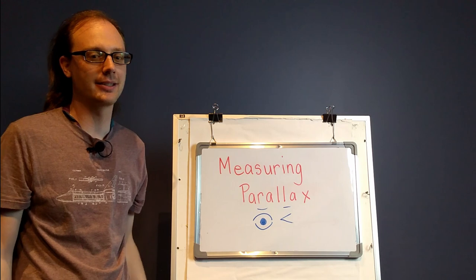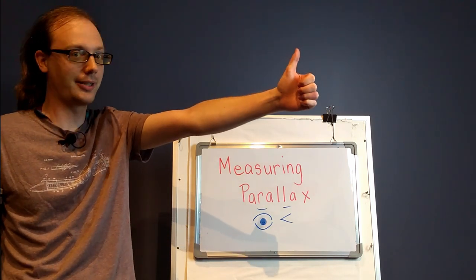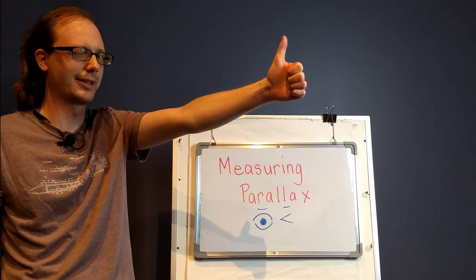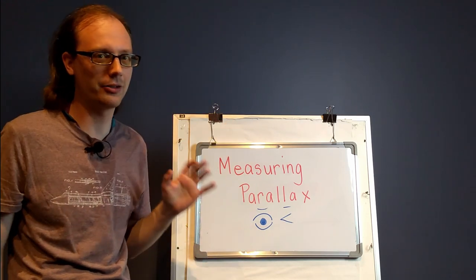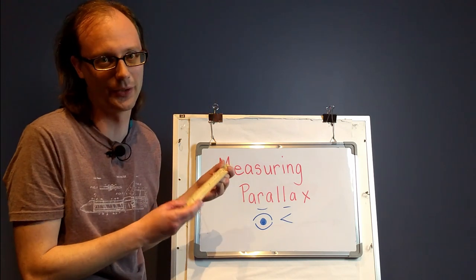Let's start by finding the distance from my thumb when it's outstretched in front of me. I'll start by using the parallax method to measure the distance, then see how accurate that is in comparison to measuring the old-fashioned way with a ruler.